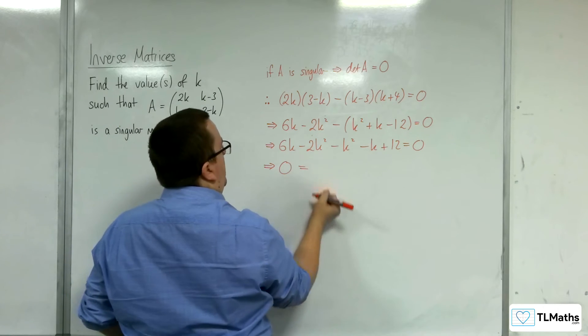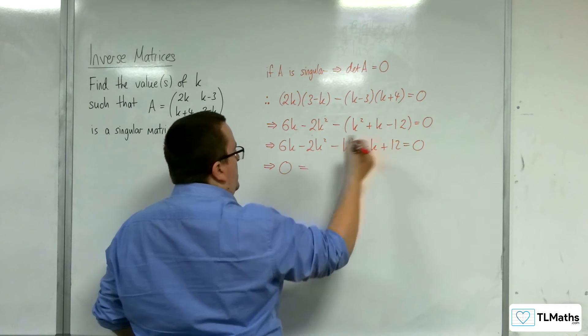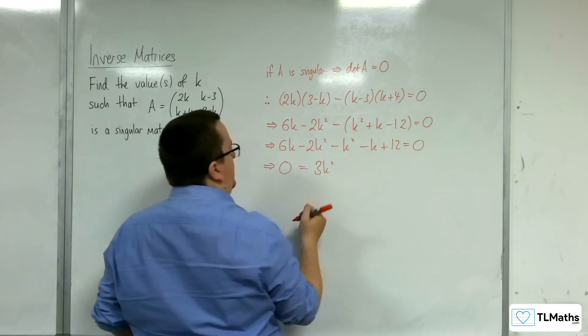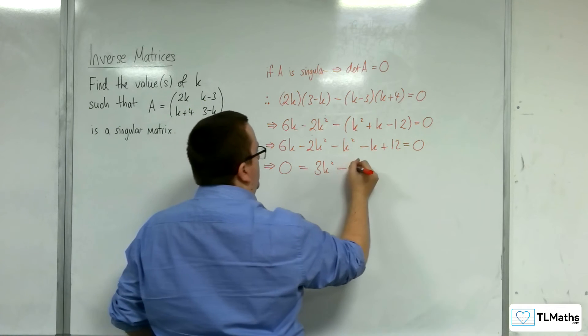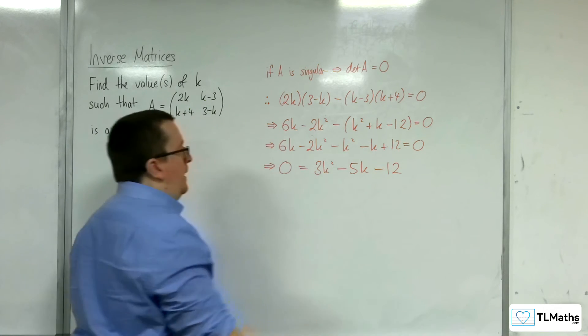Let's move everything to the right-hand side to make this nicer. We're going to have positive 3k squared, 6k take away k so negative 5k, and minus 12.